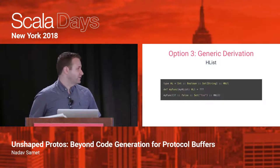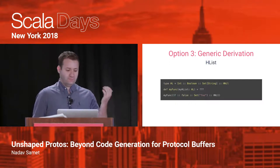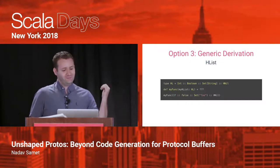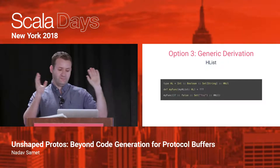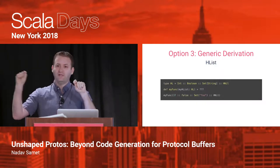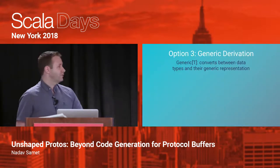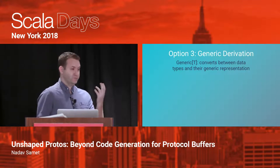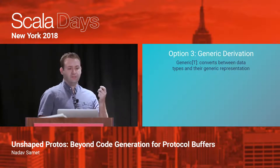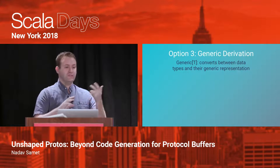You can create a type alias called HL and assign it to some HList type, then define a function that takes an instance of that type. When you call myFunction and pass a specific list, it's only going to compile if the list instance has the right types in the right places — otherwise it just doesn't compile. The second advanced concept is the Generic type class, which also comes from shapeless. It's a type class that knows how to convert from any type the user gives you to its generic representation.